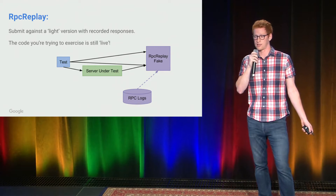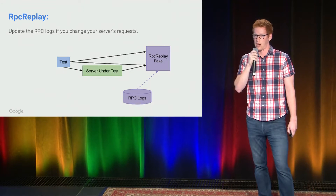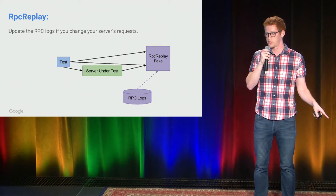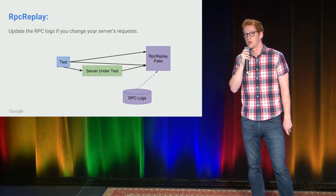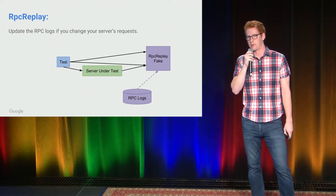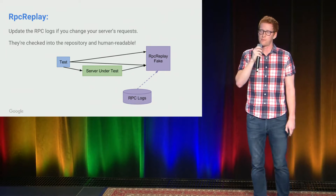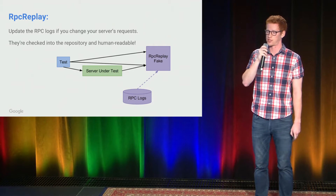All it does is read from these logged RPCs and replay the responses that the original servers would have responded with. The code you are trying to exercise is still live, and the assertions in your test process are still working against responses from your server under test. Here's the caveat: when you change your requests to the server under test, and that server then changes its requests to the backends, you do need to update the RPC logs. The RPC logs themselves are actually checked into the repository and they're human readable.